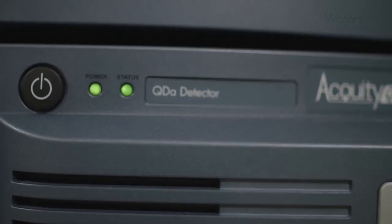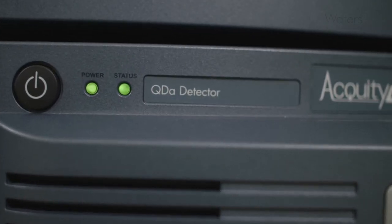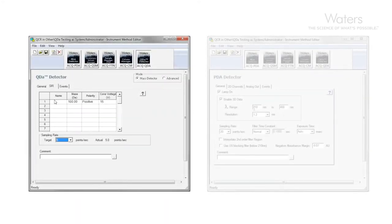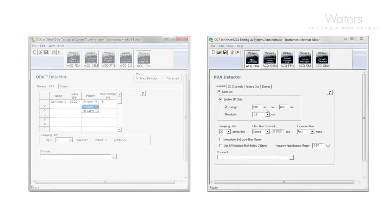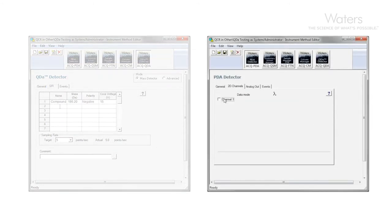As with a photodiode array detector, the Acuity QDA has two modes of operation. We can acquire full spectral data or we can look for single ions. We do this by selecting a specific mass in the Acuity QDA method. And this is something that you are familiar with when using a specific wavelength on a photodiode array.